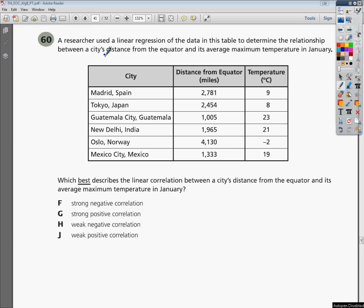Welcome, this is the Tennessee End of Course for Algebra 2 Practice Test, question number 60. A researcher used a linear regression of the data in this table to determine the relationship between a city's distance from the equator and its average maximum temperature, which best describes the linear correlation between a city's distance from the equator and its average maximum temperature in January.